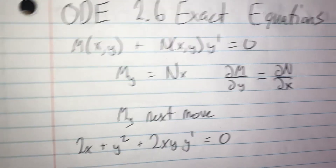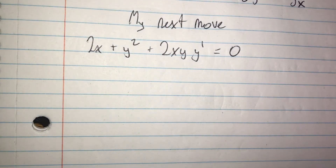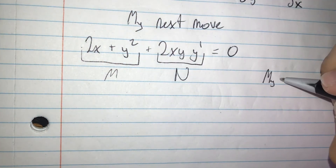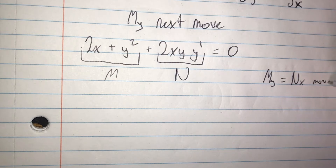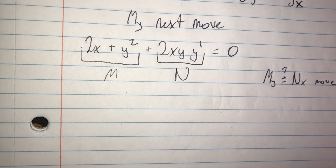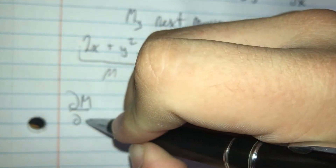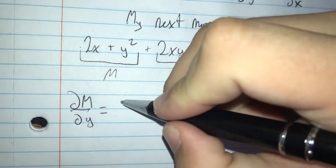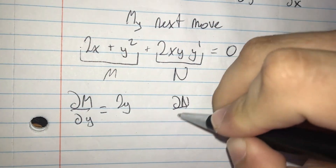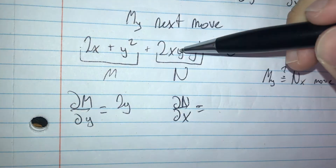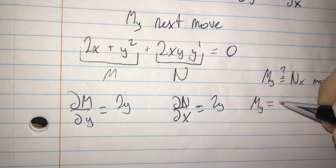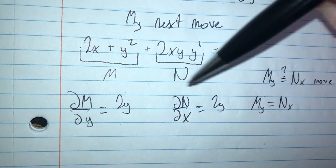So we have the problem: 2x + y² + 2xy·y' = 0. We identify M = 2x + y² and N = 2xy, and we want to find 'my next move.' We put a question mark above it because we don't know yet if it's exact. Partial derivative of M with respect to y: the x term goes away, giving us 2y. Partial derivative of N with respect to x gives us 2y as well. Since My = Nx, the equation is exact.